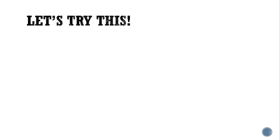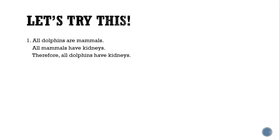First example: all dolphins are mammals; all mammals have kidneys; therefore, all dolphins have kidneys. Is it deductive or inductive reasoning? It is an example of deductive reasoning, because we have general premises and it is a fact that all dolphins are mammals and all mammals have kidneys.